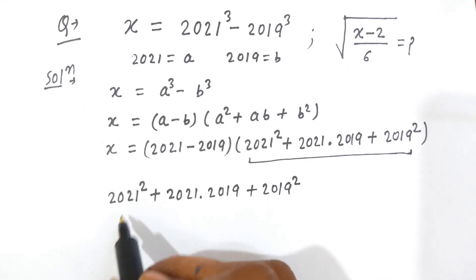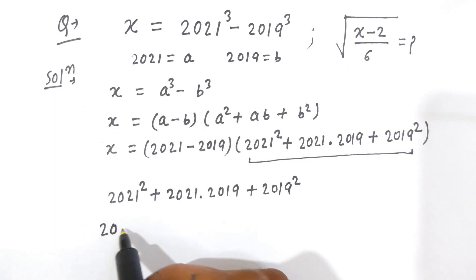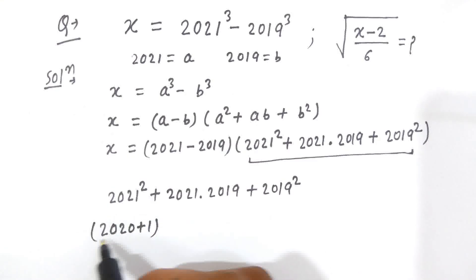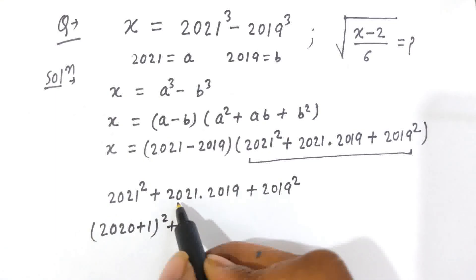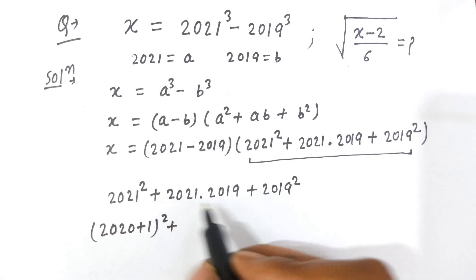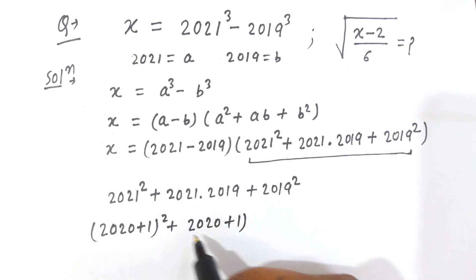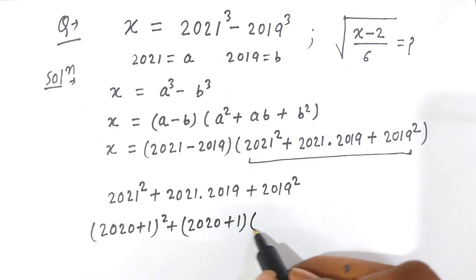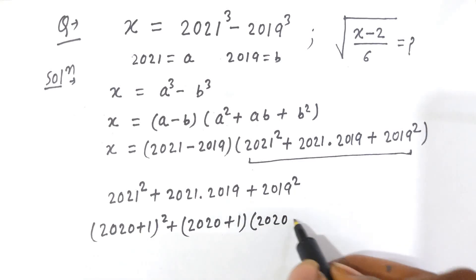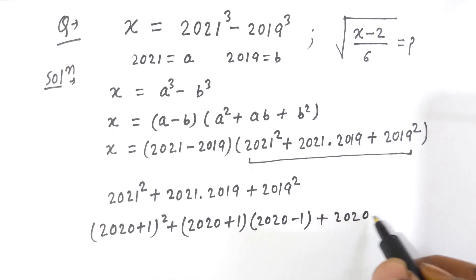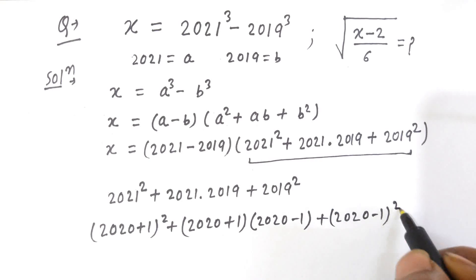Now, 2021 is the same as (2020 plus 1) whole squared, and 2021 is the same as (2020 plus 1), and 2019 is the same as (2020 minus 1), and 2019 squared is the same as (2020 minus 1) whole squared.